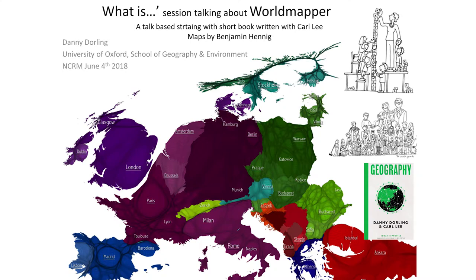They're called cartograms. Cartograms are distorted maps, normally by population, but can be distorted by other things. This is a cartogram of Europe. Every square there is the size of the number of people living in the square. And you can see, for instance, that the UK is quite a large blob, but not a blob that the rest of Europe couldn't really live without quite happily if it had to. Let's put it that way — it's a way of putting it in perspective.